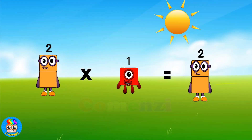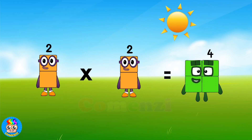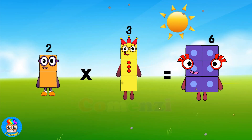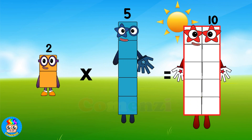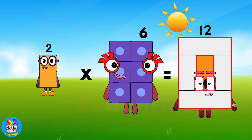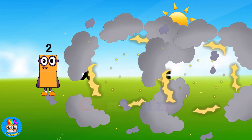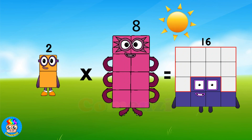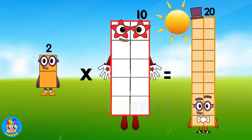Two times one is two, two times two is four, two times three is six, two times four is eight, two times five is ten, two times six is twelve, two times seven is fourteen, two times eight is sixteen, two times nine is eighteen, two times ten is twenty.